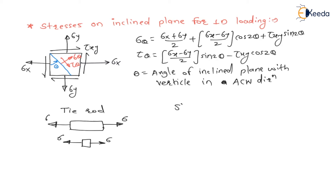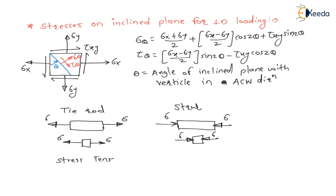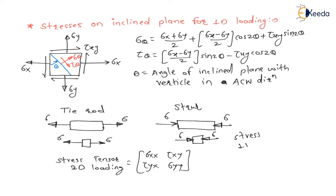A strut is nothing but a compressive member — it is subjected to compressive stress sigma. For 1D loading, the stress tensor is simply [sigma], a 1×1 matrix, compared to the 2D stress tensor [sigma_xx, tau_xy; tau_yx, sigma_yy]. So 1D loading means a uniaxial stress system.